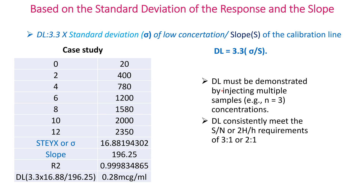DL must be demonstrated by injecting multiple injections — at least three. DL must consistently meet the S/N (2H/h) requirement of 3:1 or 2:1.